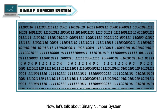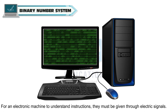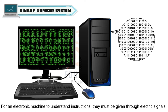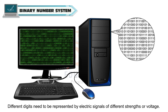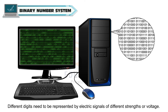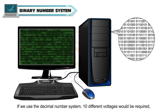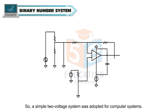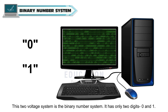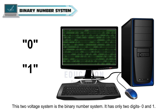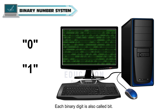Now, let us talk about the binary number system. Binary number system is the one used in computers. For an electronic machine to understand instructions, they must be given through electric signals. Different digits need to be represented by electric signals of different strengths or voltage. If we use the decimal number system, 10 different voltages would be required, which is very complex to implement. So, a simple 2-voltage system was adopted for computer systems. The 2-voltage system is the binary number system. It has only two digits, 0 and 1. Each binary digit is also called a bit.